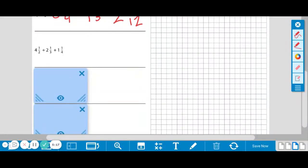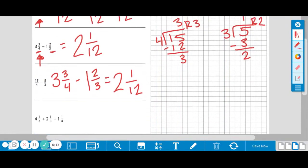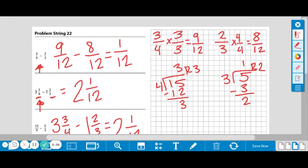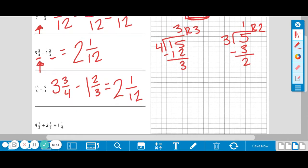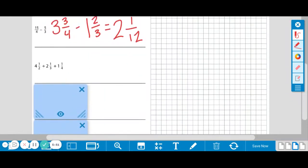The next problem is 4 and a half plus 2 and 1 third plus 1 and 1 fourth. All of these denominators are different, so we need to change all of them. If we take a moment and pause, we're going to hopefully recognize that the thirds and the fourths, we did this earlier, and we know we can change them into 12ths. And 12 is an even number, so it will be a multiple of 2 as well. So we can make all of these fractions into 12ths.